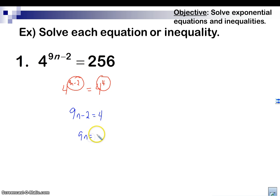Come on, guys. This is an easy problem to solve now, right? We just add 2, divide by 9, and we get n equals, simplify that out. That's going to be 2 thirds. 3 goes into both of them. That's my answer. That's all there is to it. The hardest part here is figuring out that this is 4 to the 4th.